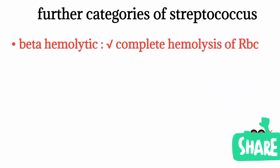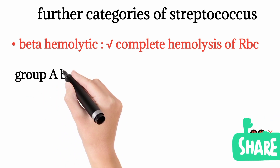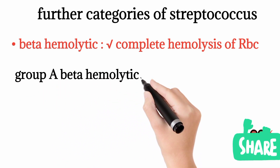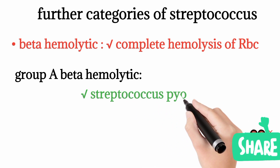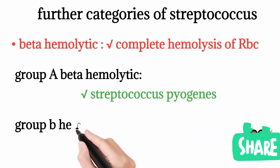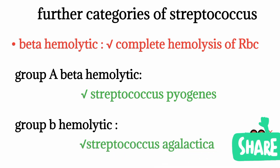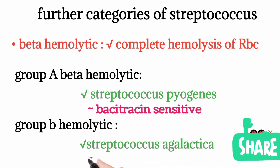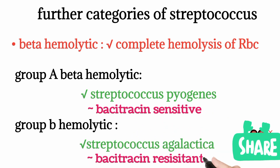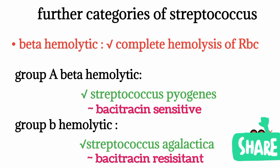There are two categories within beta-hemolytic Streptococcus. One is group A beta-hemolytic, which is Streptococcus pyogenes, and the second is group B beta-hemolytic, which includes Streptococcus agalactiae. To differentiate the two, we use Bacitracin sensitivity. Group A beta-hemolytic Streptococcus pyogenes is Bacitracin sensitive — adding Bacitracin medium will destroy its colonies. Streptococcus agalactiae is Bacitracin resistant. Group B is Bacitracin resistant whereas group A is Bacitracin sensitive.